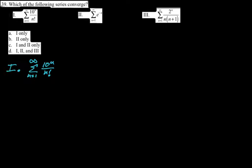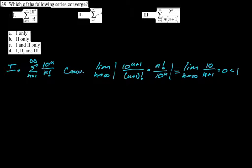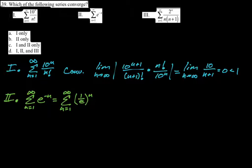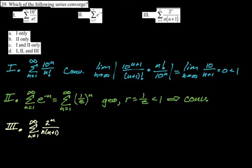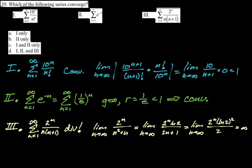For option one, I'm going to use the ratio test because of the factorial. The limit ultimately is zero, which is less than one, so convergent. For two, it's just geometric. One over e is less than one, so this converges. For three, I would use the n-term test for divergence — exponentials grow faster than polynomials, so this will go to infinity. Our final answer is that one and two converge and three diverges, so the answer is C.